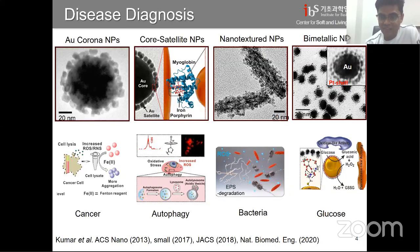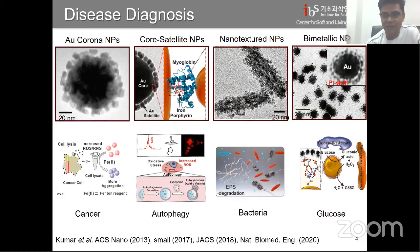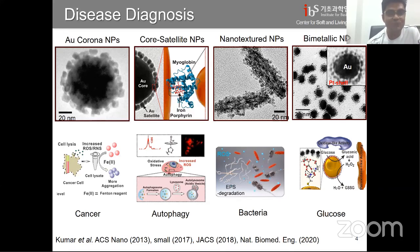The last one is the bimetallic nanoparticle. It has a core of around 5 to 6 nanometers — very optimum for the size of enzymes and real proteins. We coated platinum on top of it, with the enzyme inside the pocket. It has very good oxidase and peroxidase activity, and we used it for lateral flow assay to detect viruses and glucose.